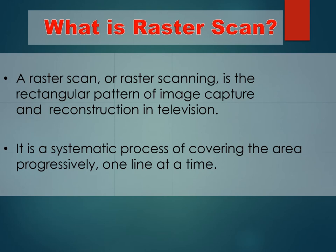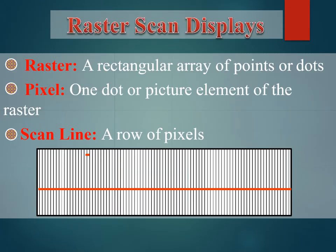What is raster scan? A raster scan is a regular pattern of image capture and reconstruction. In a television, it is a systematic process of covering the area progressively, one line at a time. In raster scan, an image is subdivided into a sequence of strips, usually horizontal strips known as scan lines. Each scan line can be transmitted as an analog signal as read from a video source, or divided into discrete pixels for processing in a computer system. This ordering of pixels by rows is known as raster order or raster scan order, as clearly shown in the figure.